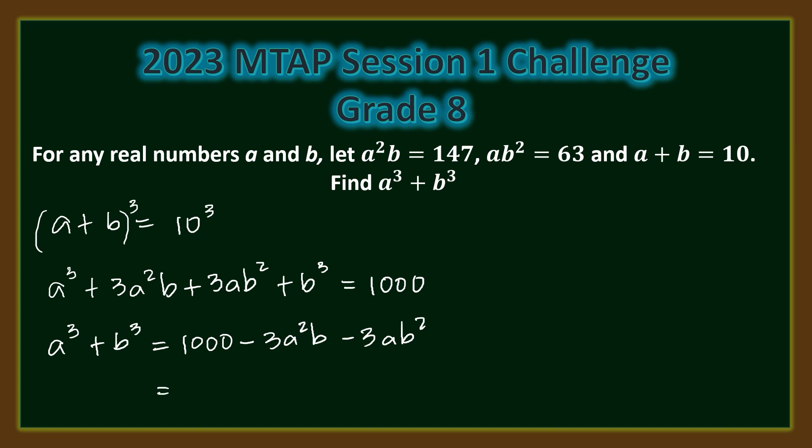Simplifying the right-hand side of this equation, we have 1000 minus 3 times a squared b plus ab squared. We are also given that a squared b equals 147, and ab squared equals 63.